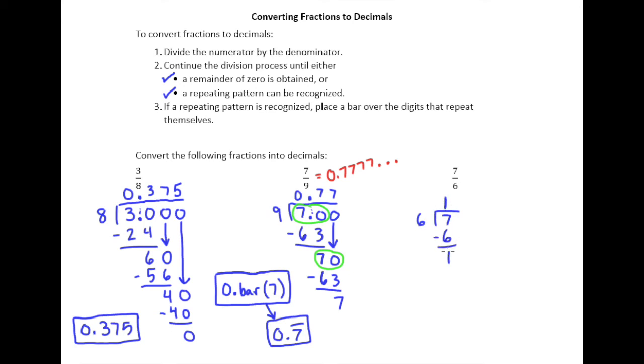So one times 6 is 6. You get a remainder of 1. But then remember, we're going to put a decimal point after our 7. Put that decimal point directly above. Drop the 0. Six goes into 10 once. And now we're going to get a remainder of 4. Let's add another 0. Six goes into 40 six times. Six times 6 is 36. A remainder of 4 again.